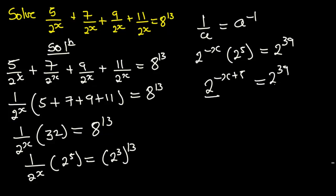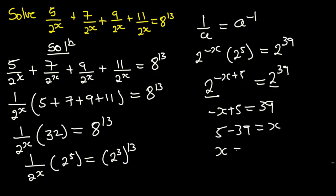Since we have the same base, we equate the exponents: negative x plus 5 equals 39. Making x the subject, we get 5 minus 39 equals x, so x equals negative 34. This is our final answer to this problem.